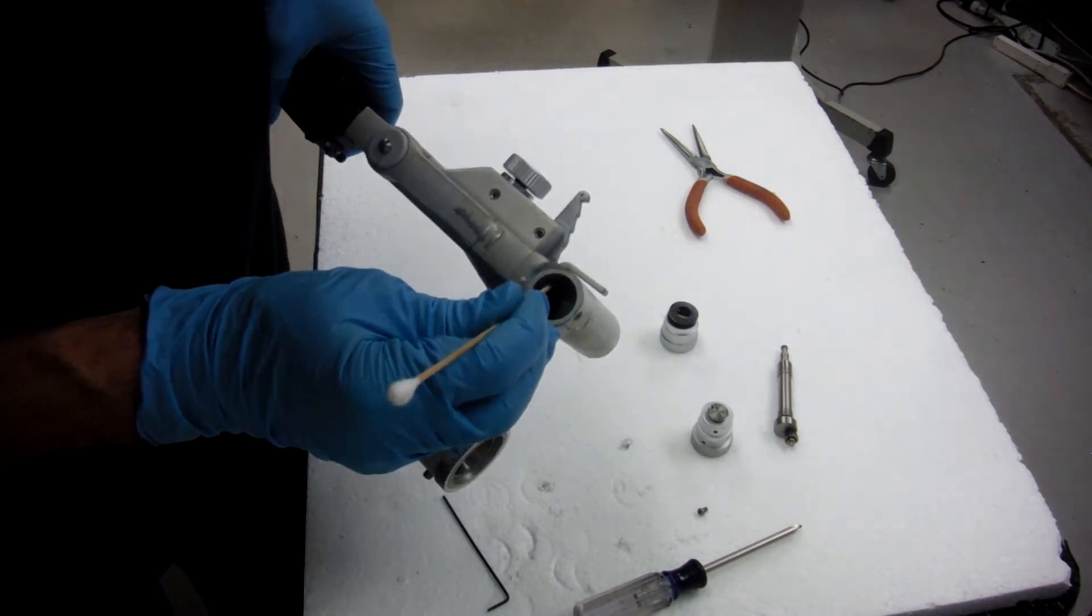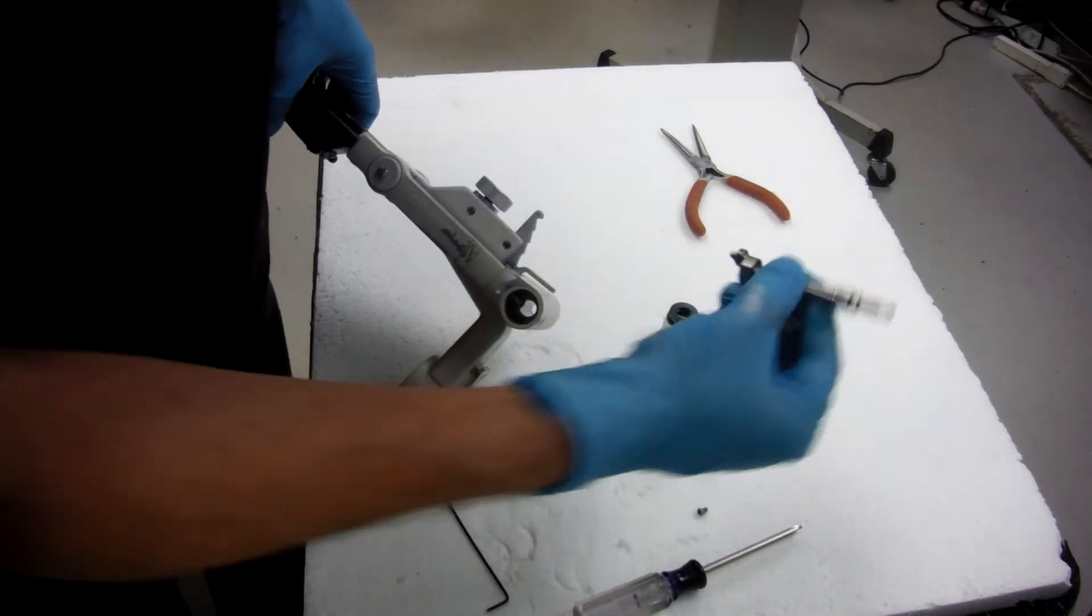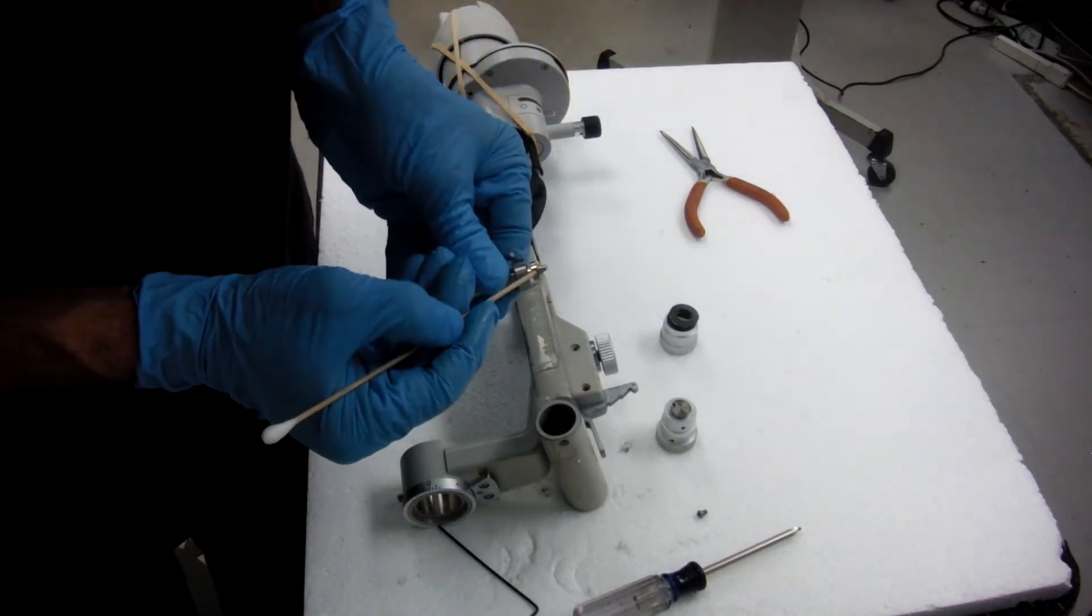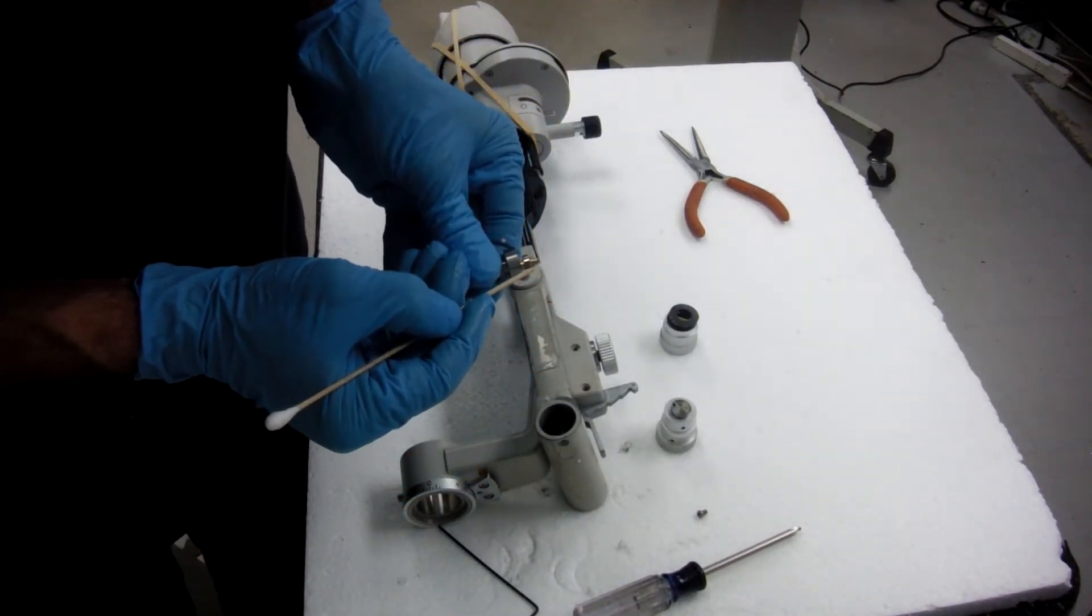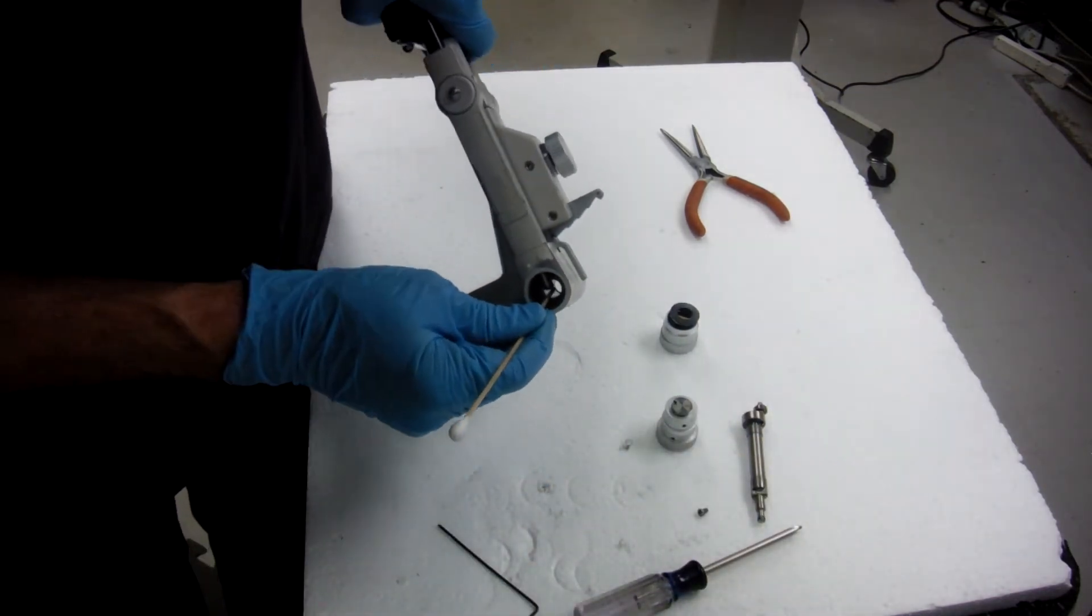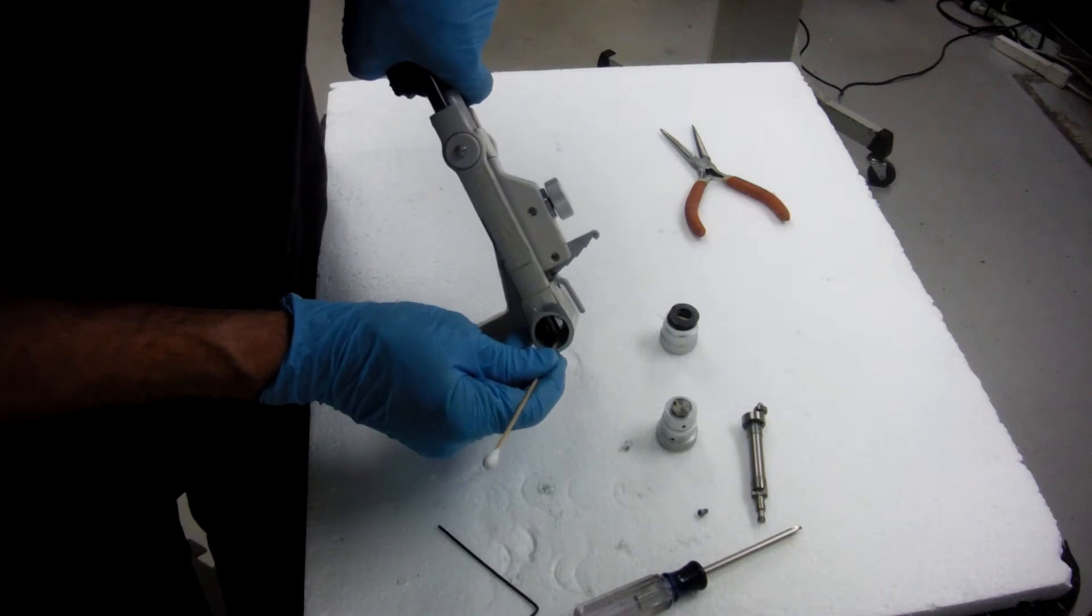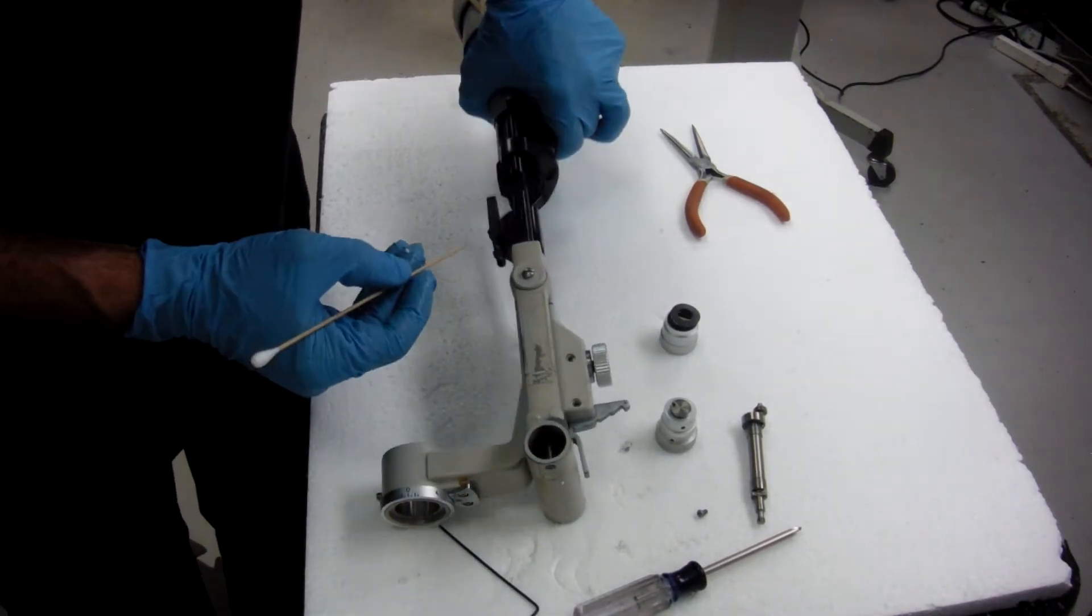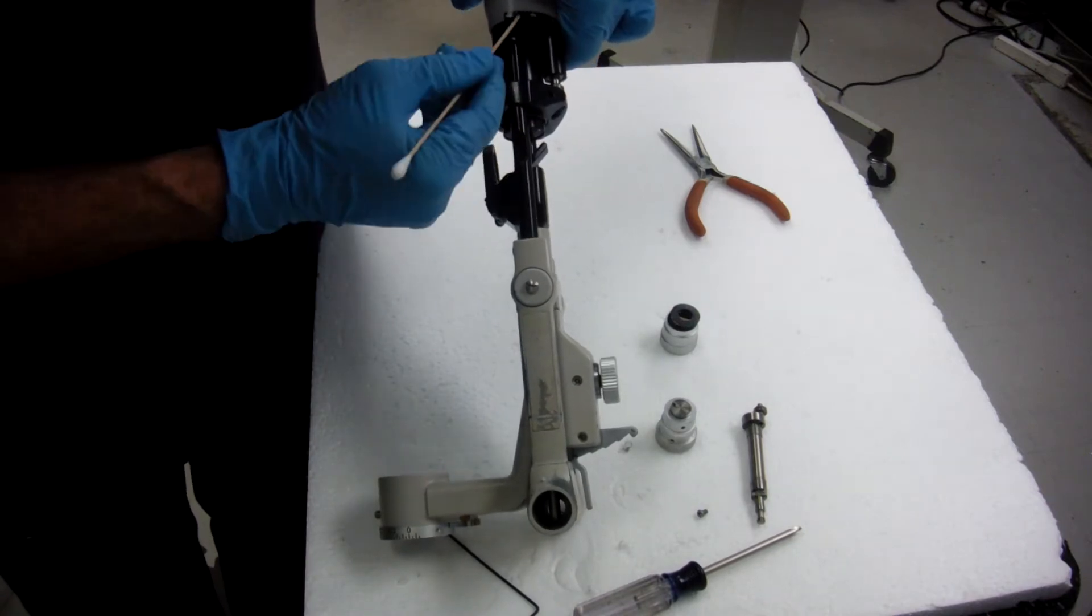Inside here you have this pin that rides on this bearing. When it goes up and down, it pushes this pin up and down, which pushes the rod, which pushes your table.